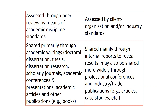In academic research, results are assessed through peer review by means of academic discipline standards. In professional research, results are assessed by the client or the organization for whom the services have been done. Academic research is shared primarily through academic writings such as doctoral dissertations, theses, research articles, academic conferences, and presentations. Professional research is typically shared through internal reports, and may also be shared more widely through professional conferences and industry trade publications.